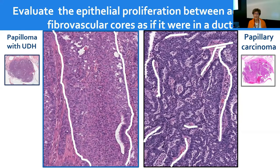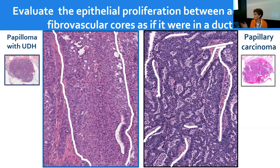The question is how to evaluate the epithelial proliferation within a papillary lesion. Papillary lesions tend to be very busy and can be overwhelming. My approach is simple: I identify two adjacent fibrovascular cores, then evaluate the epithelium between them using the same criteria for UDH, ADH, and DCIS. For example, in this case on the left, the epithelial proliferation has features of UDH, and applying this evaluation in different areas of the large papillary lesion, I diagnosed papilloma with UDH.